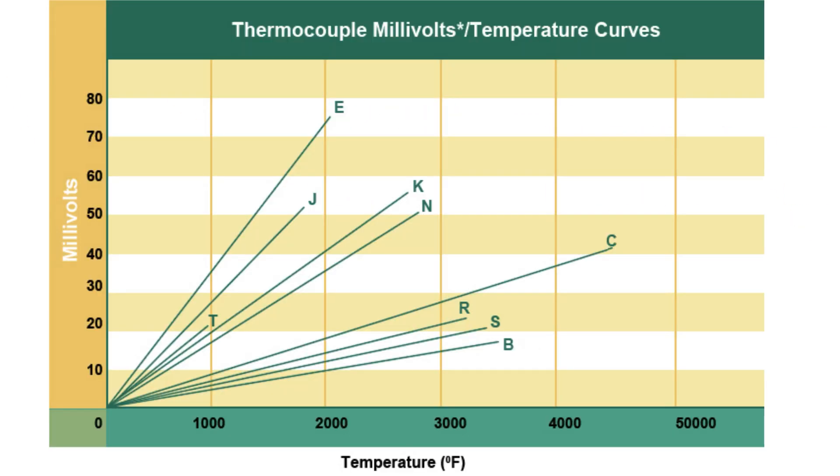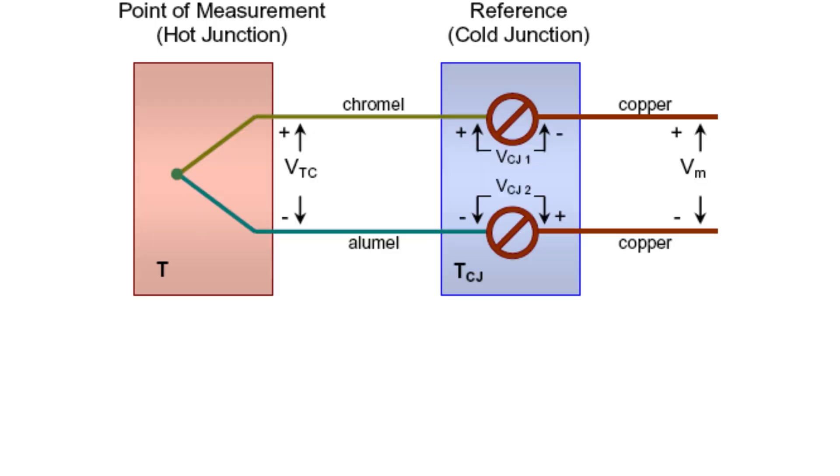Cold junction compensation replaces the ice bath. An electronic circuit replaces the ice bath by adjusting the voltage, compensating as if the cold end was in an ice bath, hence we call it cold junction compensation.